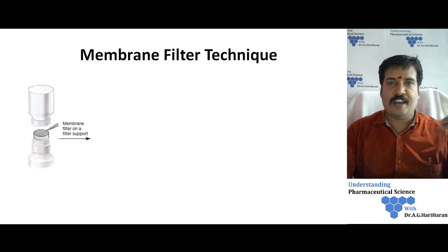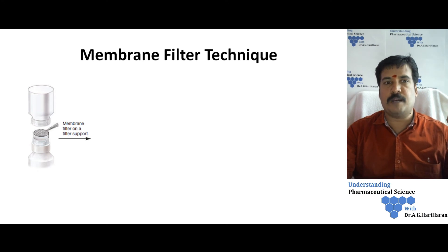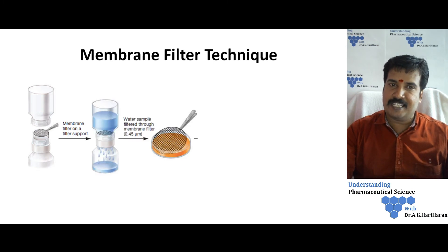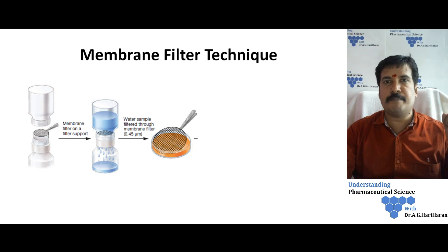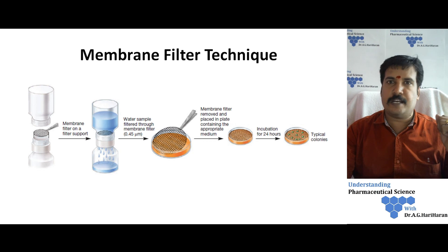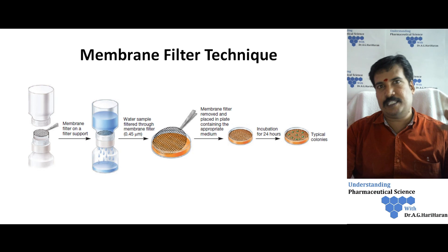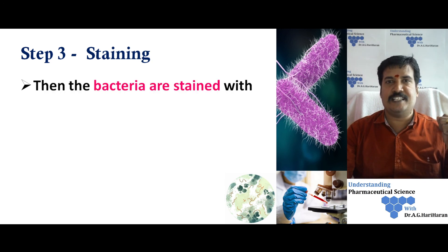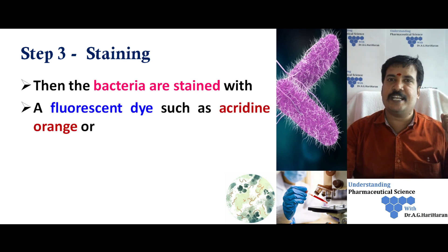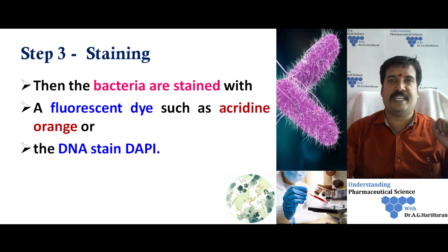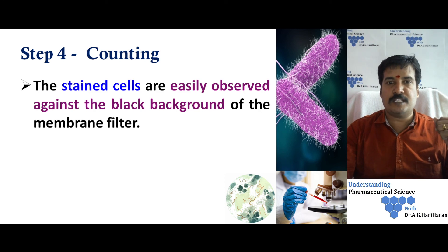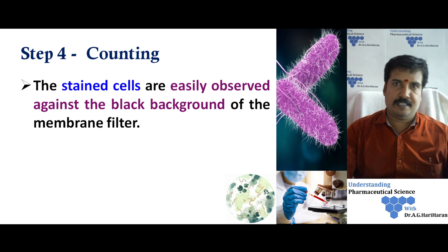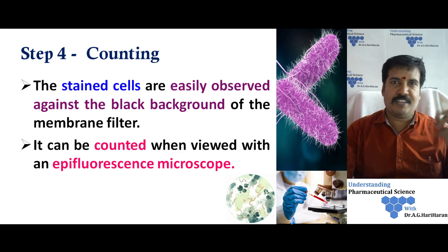The filter is then placed on an appropriate medium-containing agar surface and incubated. After incubation, cells grow into colonies that can be individually counted. The process can be time-consuming but can be reduced by staining techniques — bacteria can be stained with fluorescence dyes such as acridine orange, or DNA can be stained with DAPI. This staining gives a more illustrative way of counting bacteria, done against a black background or with the help of an epifluorescence microscope, thereby providing an accurate count.